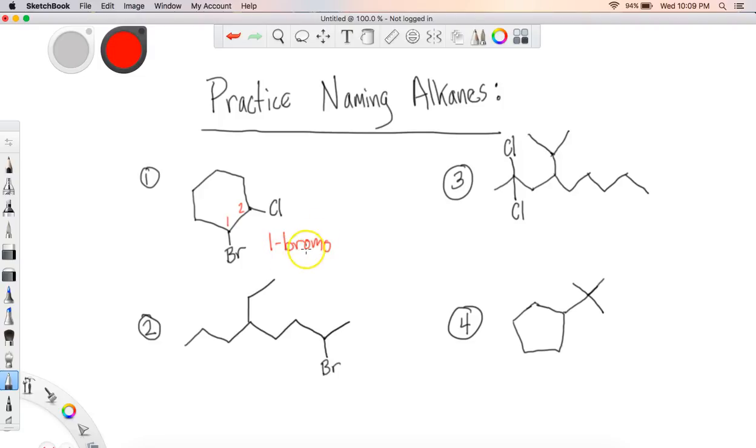Okay, the second one. If we take a look here we would have one, two, three, four, five, six, seven, eight carbons, so we're dealing with an octane. The numbering should go from right to left, so I should see one, two, three, four, five to get the lowest set of numbers.